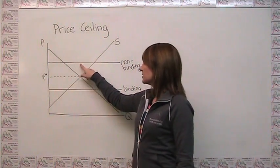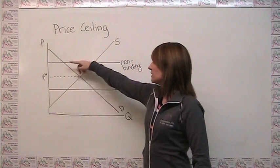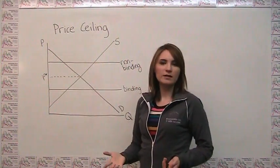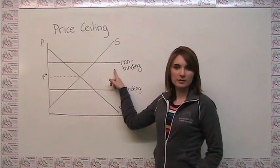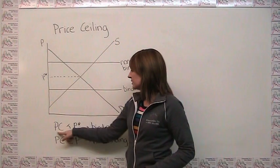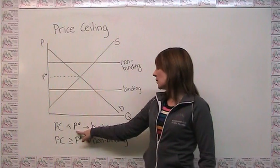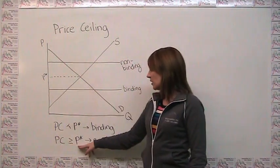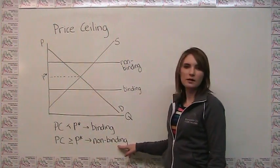On the other hand, if we set our price ceiling up here, we're saying the price can't go above this line, but the market didn't want it to go above that line anyway. So this is what we call a non-binding price ceiling. In general, if we set our price ceiling at a price below the free market equilibrium price, that price ceiling is going to be binding. And if we set our price ceiling at or above the free market equilibrium price, then that price ceiling is going to be non-binding.